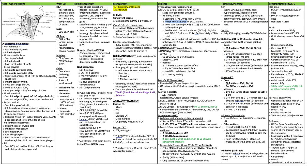The DAHANCA-6 and DAHANCA-7 trials looked at glottic radiation only and radiation plus nimorazole for supraglottic, pharynx, and oral cavity cancers. Treated with 62 to 68 Gy at 2 Gy per fraction, either five or six fractions a week. Most were early stage T1-T2 N0. Results showed increased disease-free survival and tumor control with six fractions a week — five-year local control was 70% versus 60% for five fractions. No difference in nodal control or overall survival, but increased acute toxicity with six fractions a week.